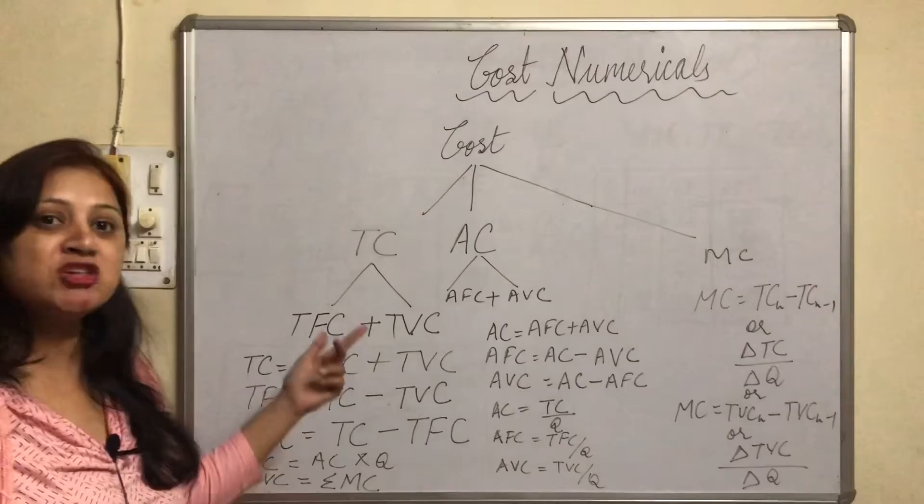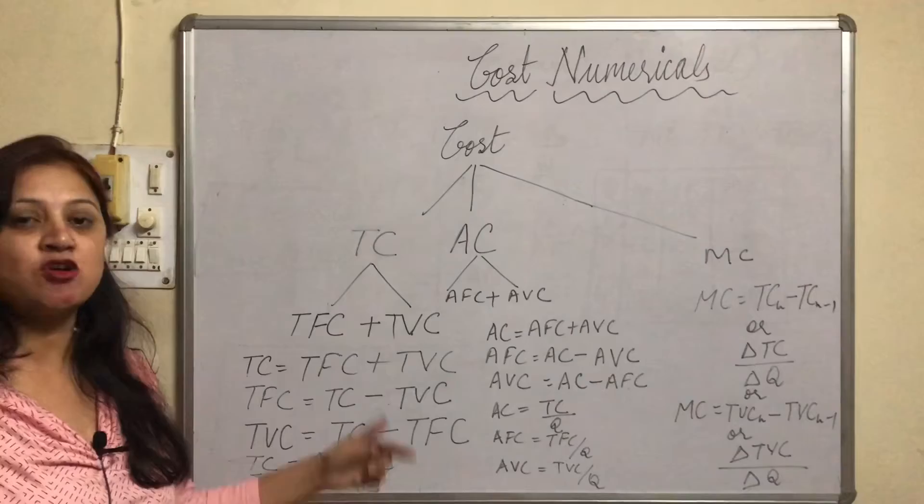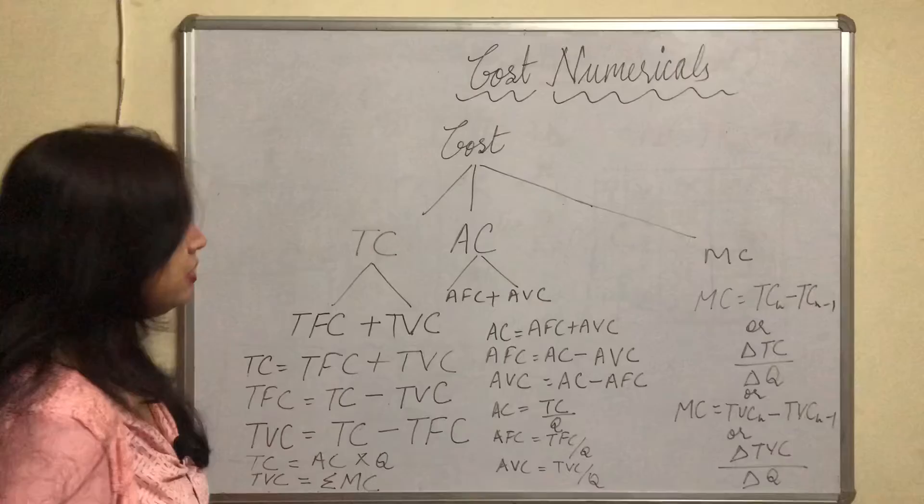And TC is the summation of TFC and TVC but MC is only variable cost. Due to that we get only TVC.